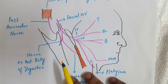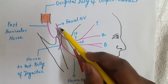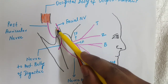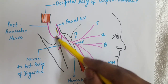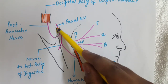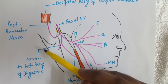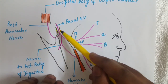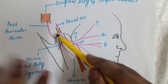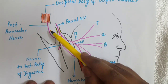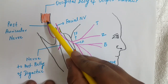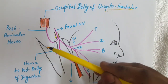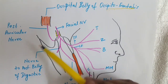Looking at the diagram: this is the facial nerve arising just below the stylomastoid foramen — this hole is the stylomastoid foramen. It ascends between the mastoid process and the back of the external acoustic meatus and supplies the occipital belly of the occipitofrontalis muscle, which we have learned in scalp anatomy.